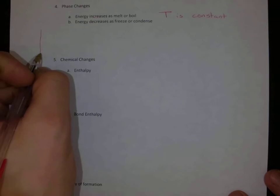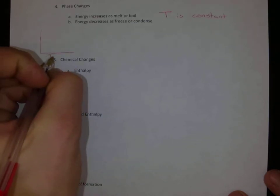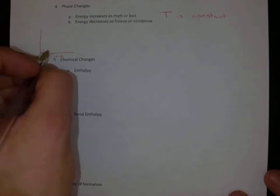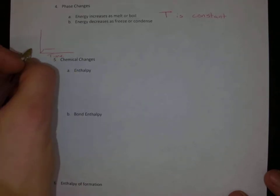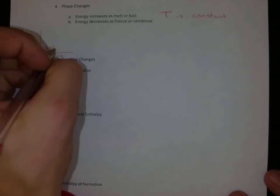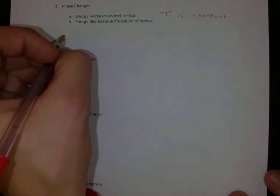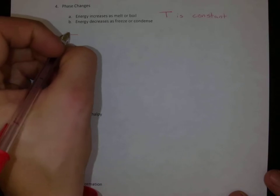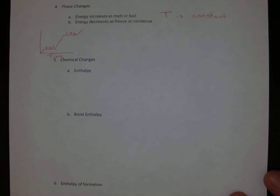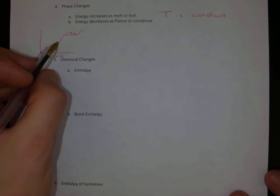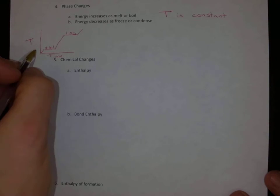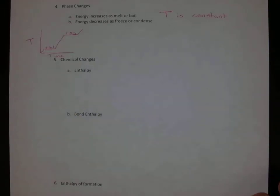So we made something last year where we heated something over time, and we went up in temperature, and then we hit a flat line. That flat line was going solid to liquid, and then we increased our temperature again, and then we had a flat line that was going liquid to gas, and then we could increase the temperature again. So solid to liquid, and then liquid to gas up here. Our temperature does not change. That's why we had our flat lines.